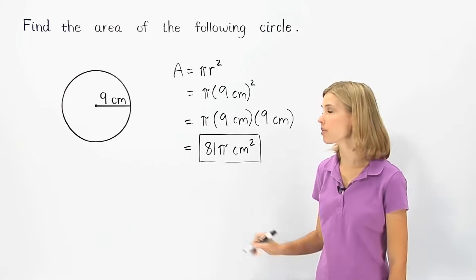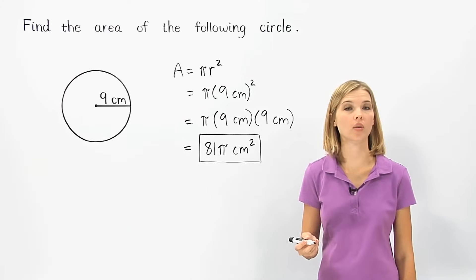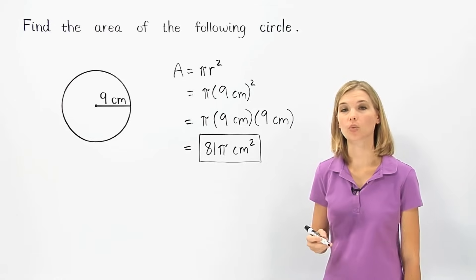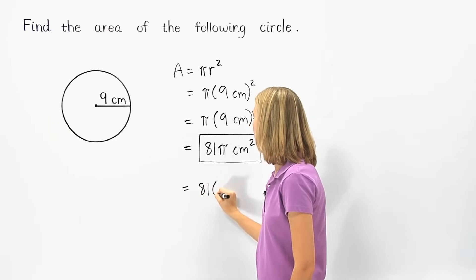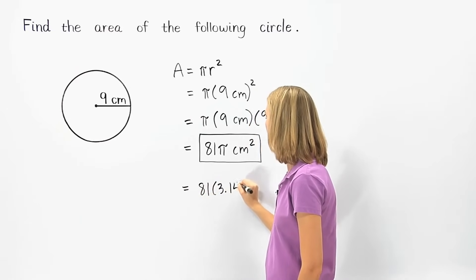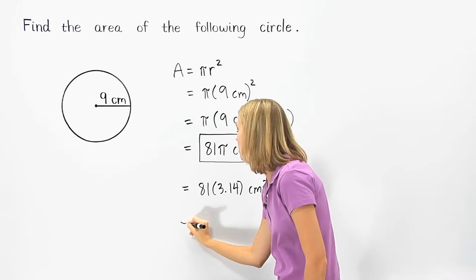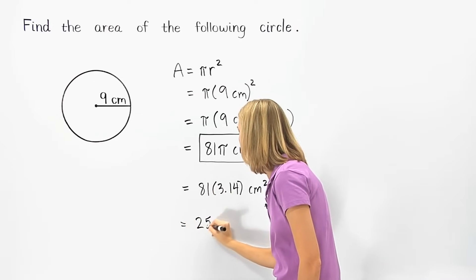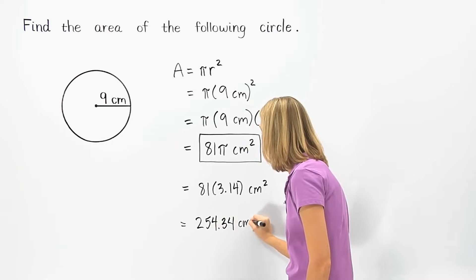Next, remember that pi is approximately equal to 22 sevenths or 3.14. So we can plug 3.14 in for pi, and we have 81 times 3.14 centimeters squared, which equals 254.34 centimeters squared.